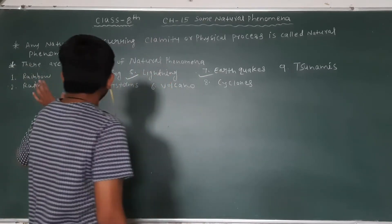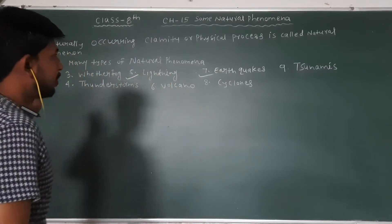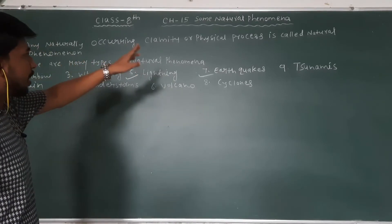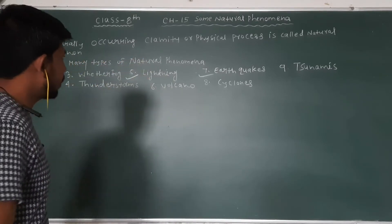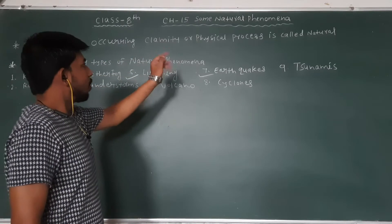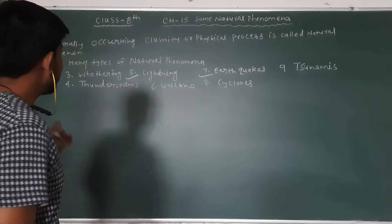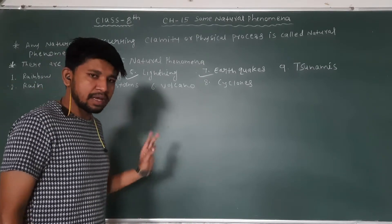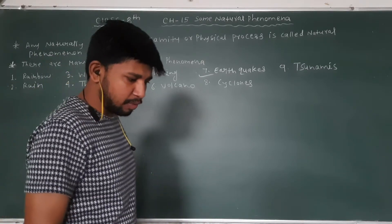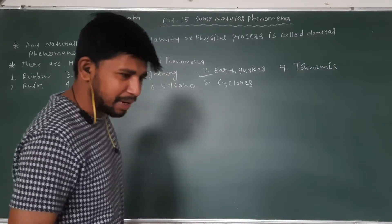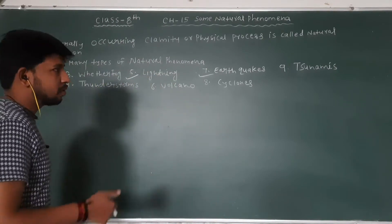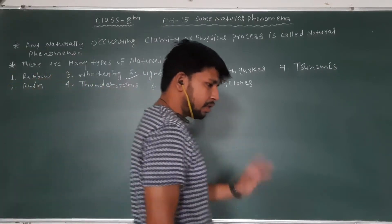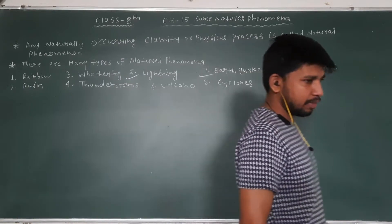So now we have to talk about natural phenomena. Natural occurring climatic and physical processes are called natural phenomena. This includes climate, nature, or physical phenomena.